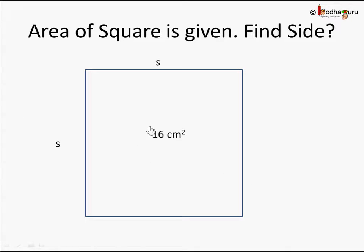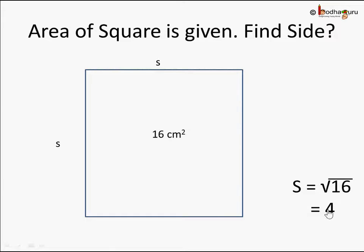Coming to the same problem again: given area as 16 centimeter square, the side would be square root of the area — that is square root of 16 — which is nothing but 4. Because we know 4 into 4 is equal to 16. So square root of 16 is 4, meaning each side is 4 centimeters long.